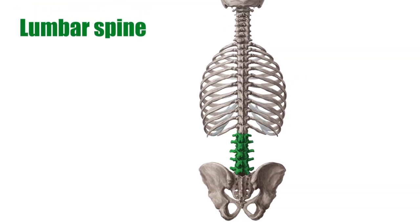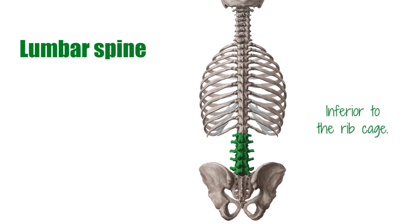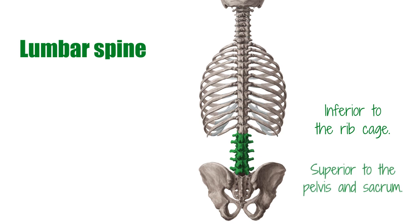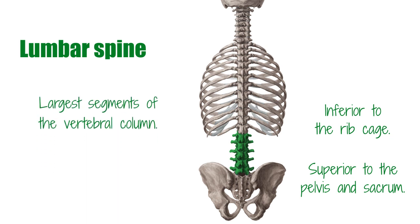The lumbar vertebrae are located at the bottom section of the vertebral column, inferior to the ribcage and superior to the pelvis and sacrum. Since these vertebrae are most largely responsible for bearing the weight of the upper body and permitting movement, they are logically also the largest segments of the vertebral column.